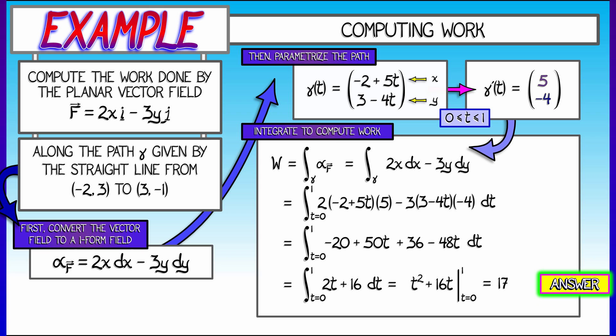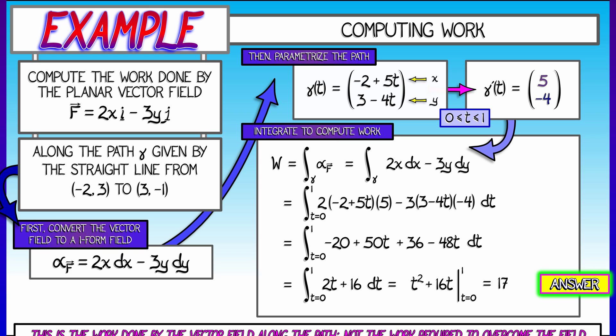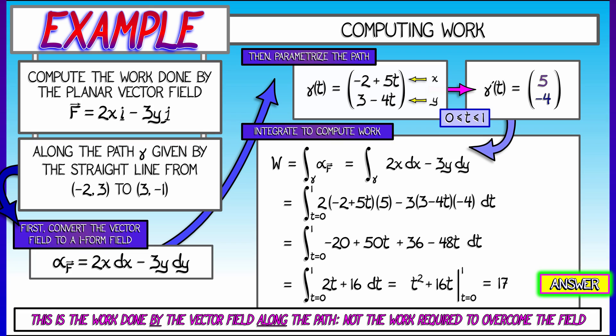Now, notice that this is really the work done by that force field along the path. This is not the work that is required for you to do in order to overcome that field. So, if you were in an airplane flying in a velocity field of wind, you might be interested in computing the work that you have to do to overcome the wind. What would that be?